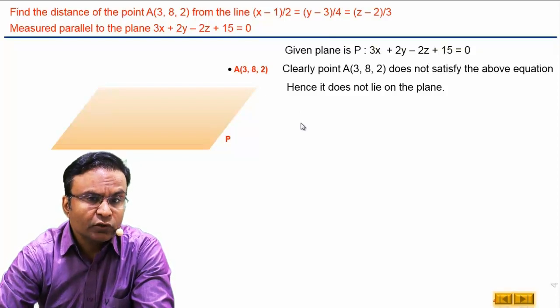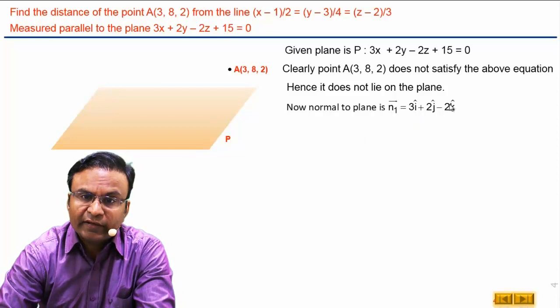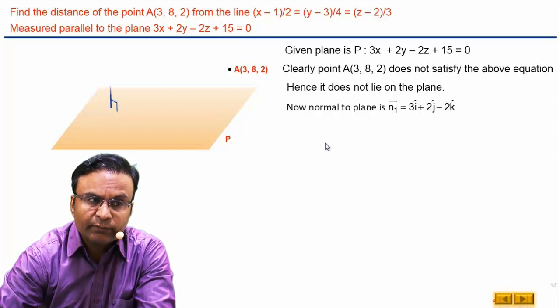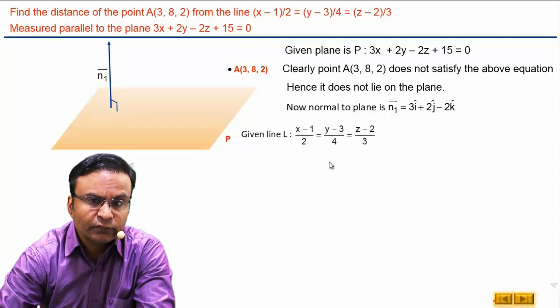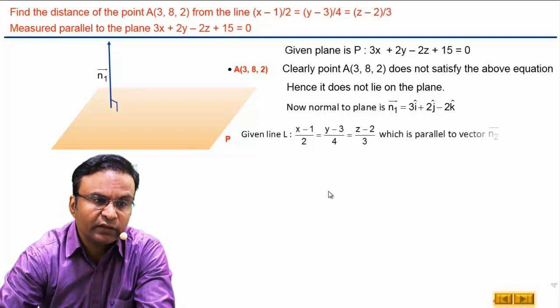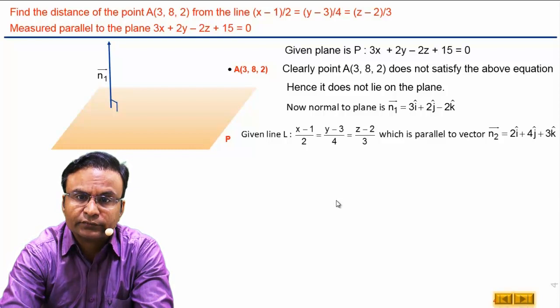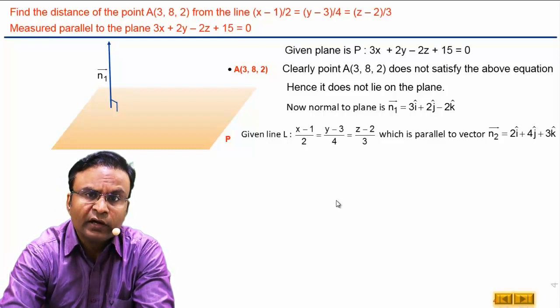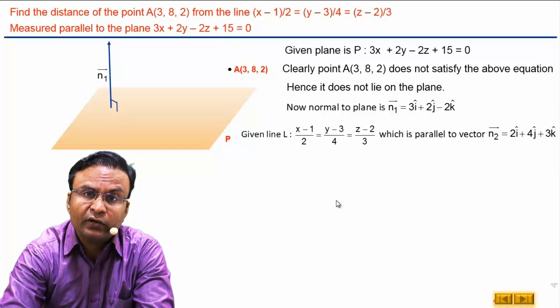For that, what is normal to this plane? Normal to this plane is vector n1, 3i plus 2j minus 2k. And given line L is this which is parallel to vector 2i plus 4j plus 3k. How we can check this line and plane are parallel or not?